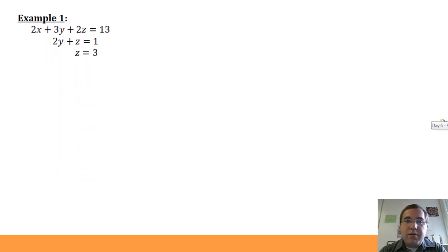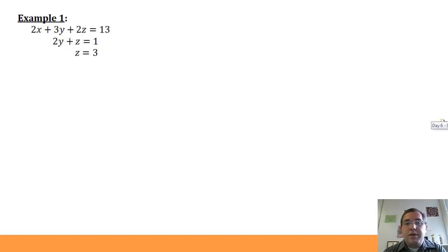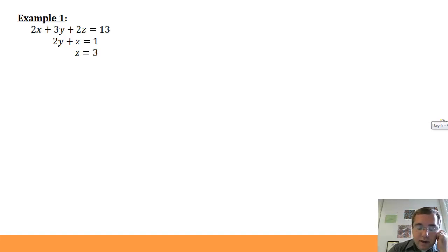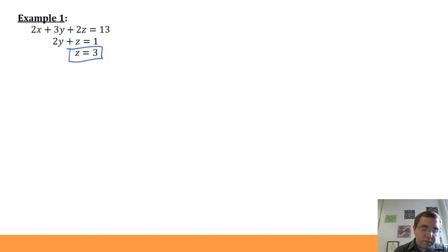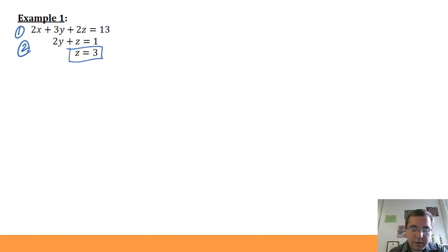Solving a system of three variables is not all that different from solving two equations with two variables. In example one, the third equation already gives us the value of one variable: z equals three. So we just plug three in for z in the other two equations. We number the equations — equation one, equation two — and equation three is already solved.